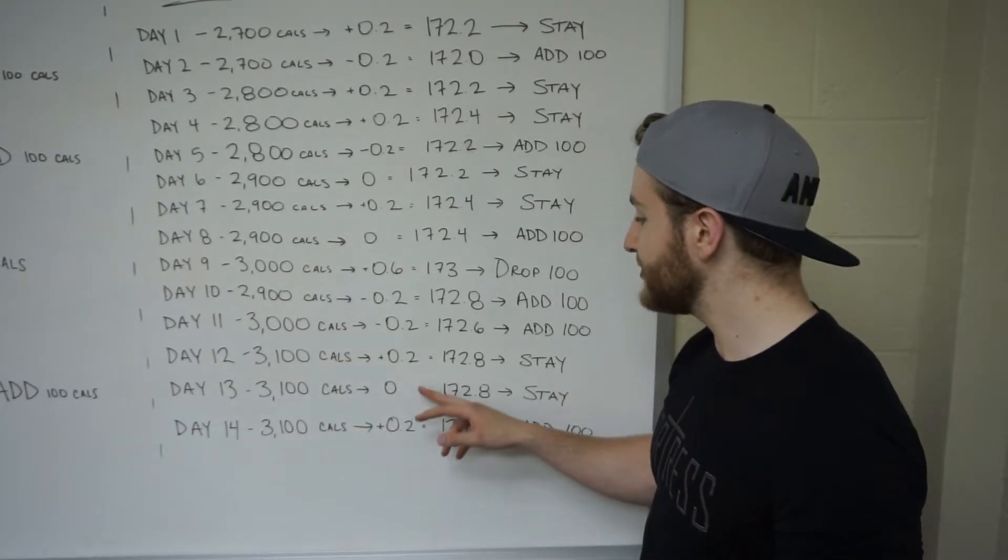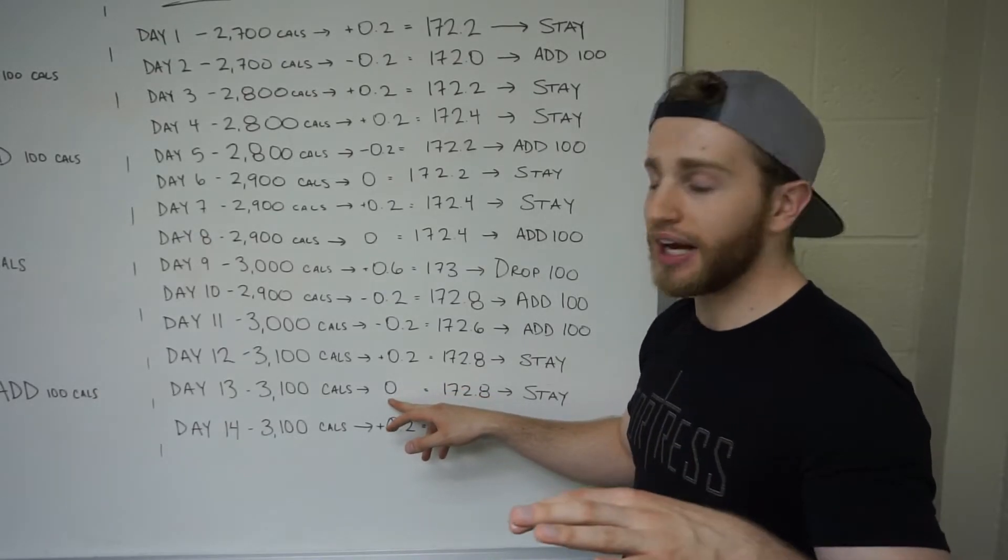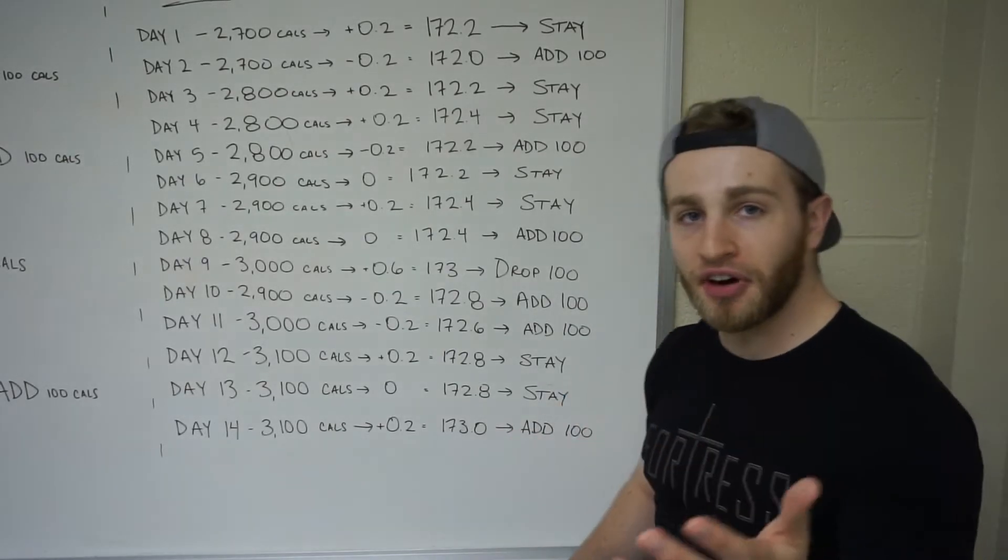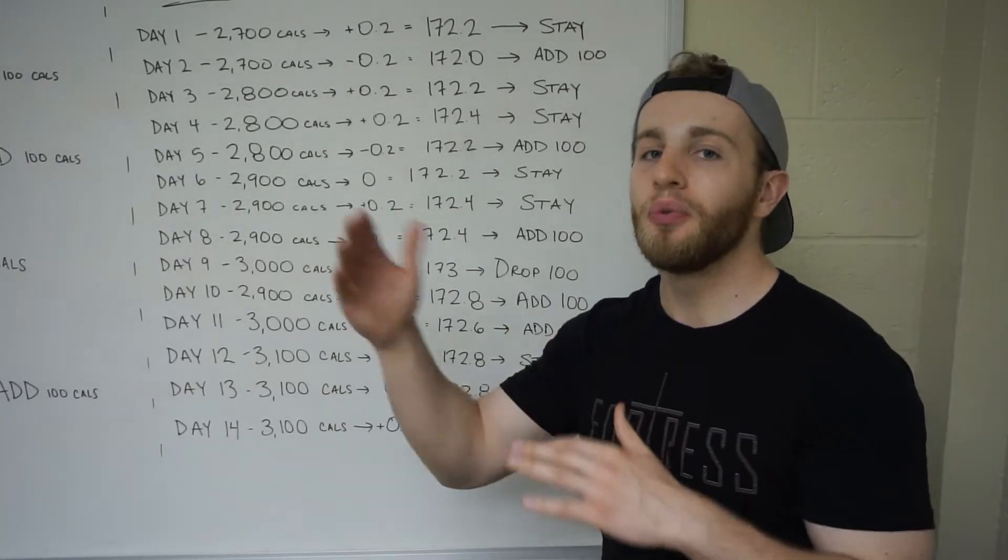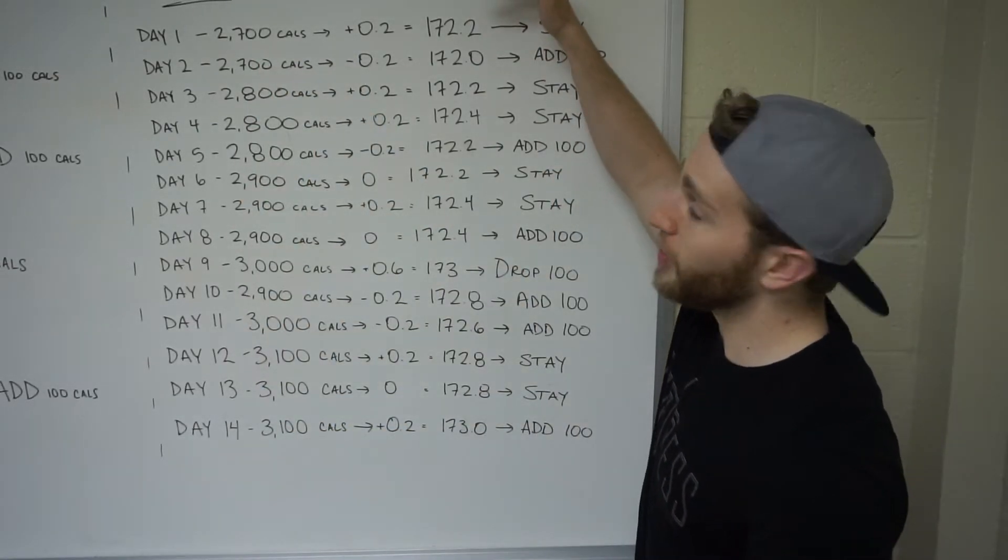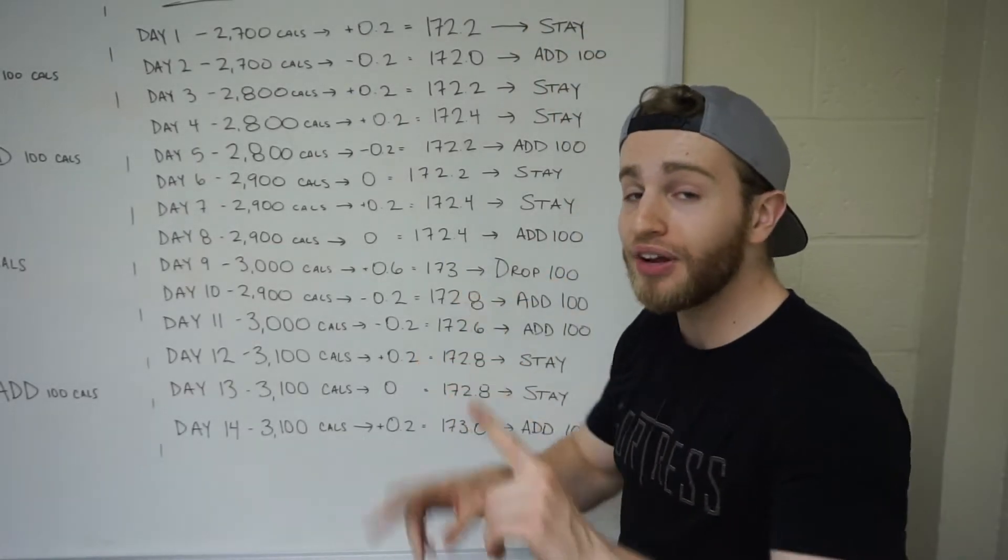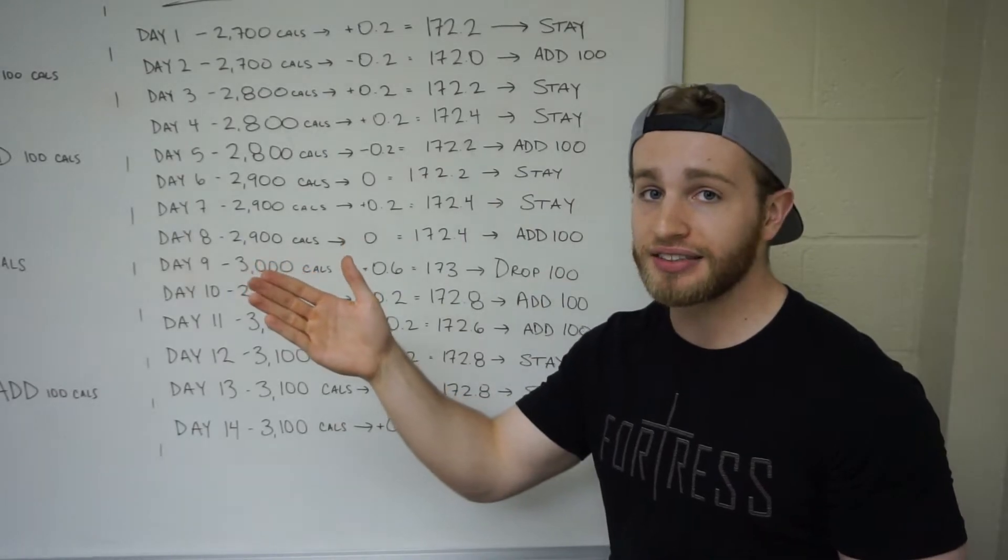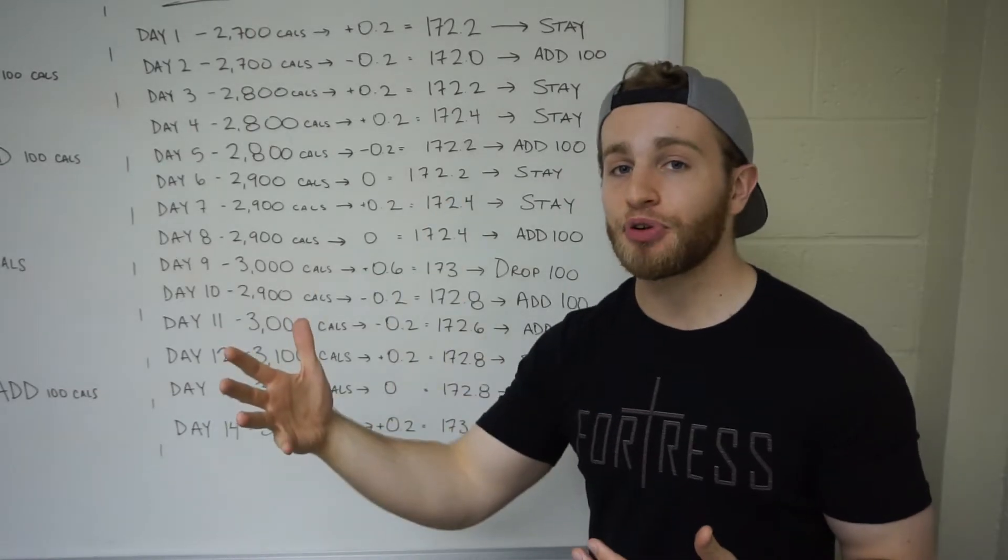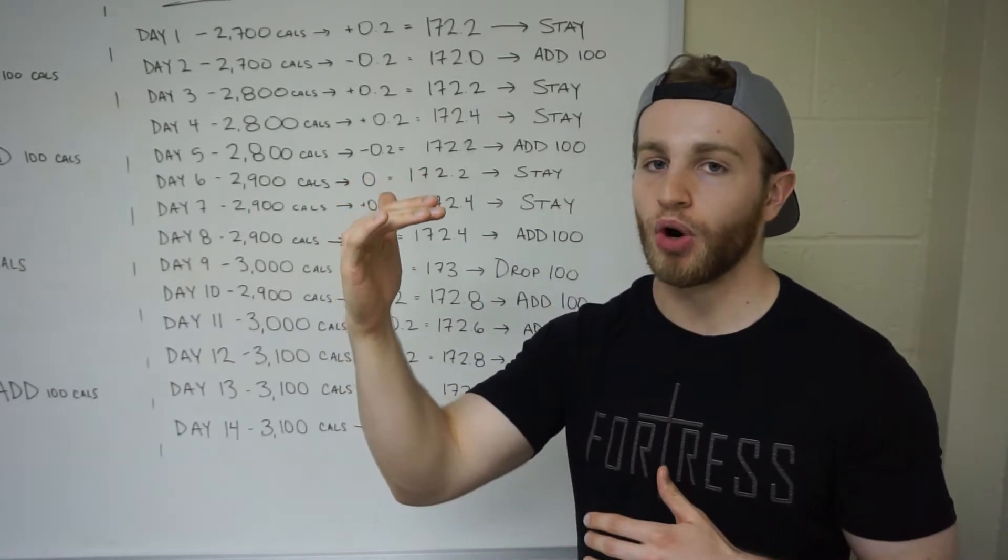We'll say that day 12 you weigh in again 0.2 pounds less. You can bump that up to 3,100. Then say over the course of the next three days you put on about 0.2 pounds one day. Your weight stays the same next day. Another 0.2 pounds a day after that. Your body should be ready to bump it up another 100 calories to 3,200. So over the course of 14 days, over two weeks, our weight has gone from around 172 pounds to 173 pounds. We've gained one pound in two weeks right on pace. And we've eased our way up 500 extra calories letting our body adapt to it without just jumping right into that 3,200 calories potentially putting on more weight.